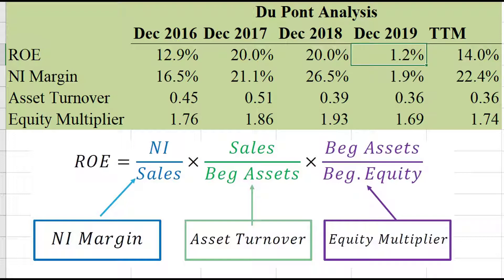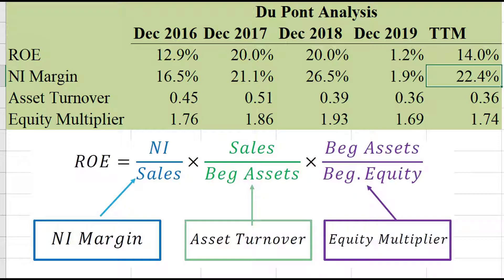What really pumps up the ROE appears to be the net income margin. For every dollar of sales, how much do you keep in profits? For this company, that's pretty good — around 22 cents. Asset turnover is not very impressive and I don't like to see it going down. Asset turnover means for every dollar of assets you have, how much sales can you generate? It looks like 36 cents for this company in the most recent year. I'd love to see that go back up.